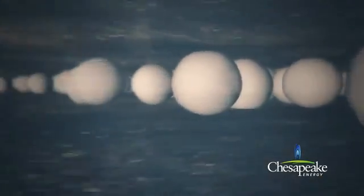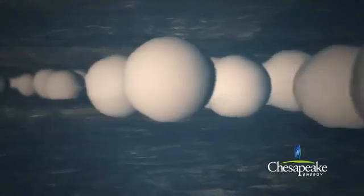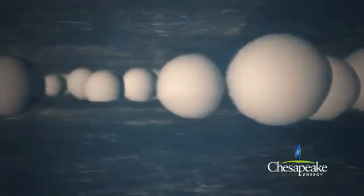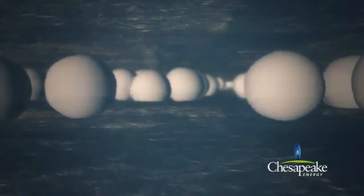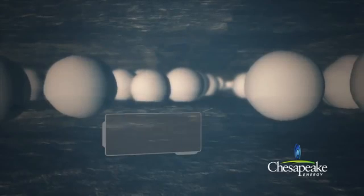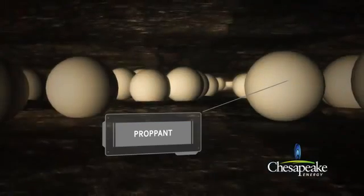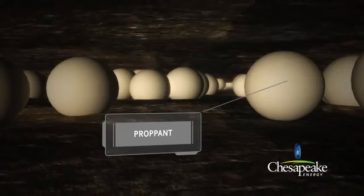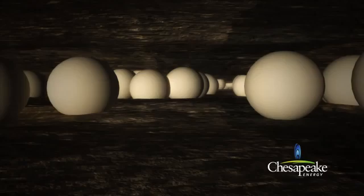After an initial stage of fluid called the pad is pumped to create a fracture area, proppant is added to the fluid and is distributed throughout the newly created fracture network. At the conclusion of the fracturing treatment, the proppant allows the fractures to remain open so that the natural gas can flow into the production casing and to the surface. This completes the first of several stages in the fracturing process.